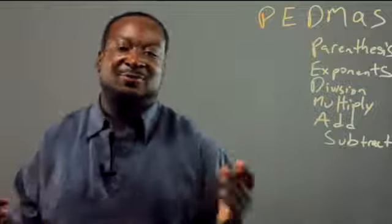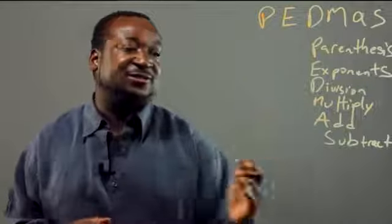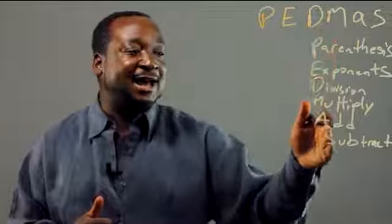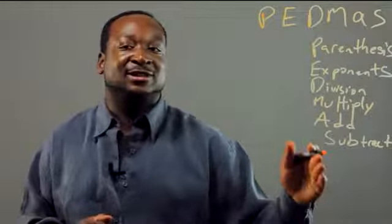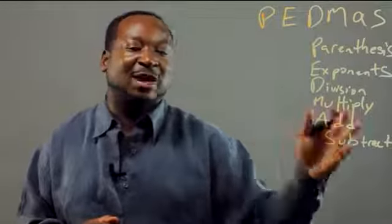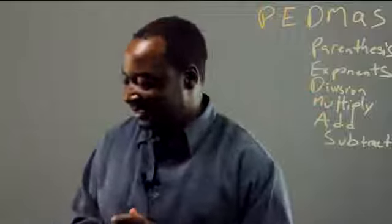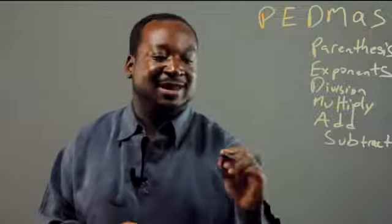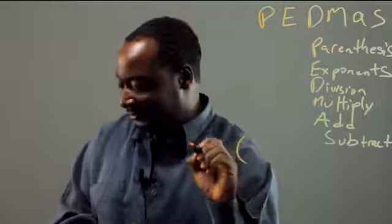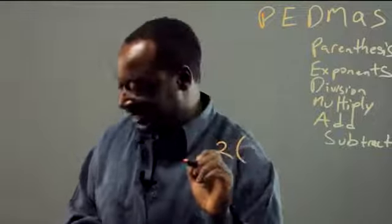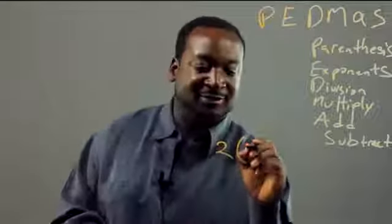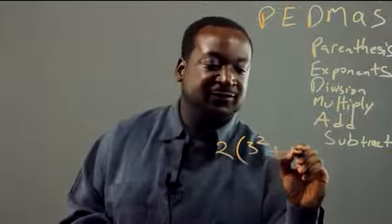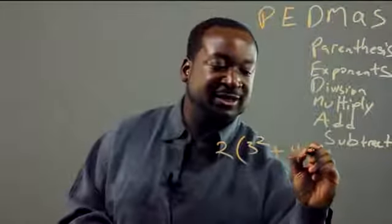Here's our basic way of solving terms. You always want to stick to these guidelines because if you do something wrong, you'll come out with the wrong value. Let's say we have the term 2 times 3 squared plus 4 times 2.